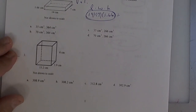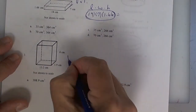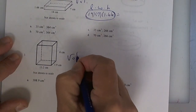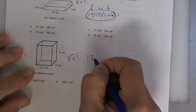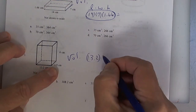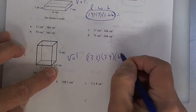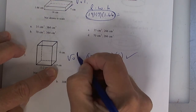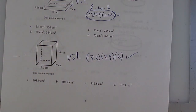Number three says volume again is what we're going to do. It works the same way. So 13.2 times 3.9 times 6. Real easy. When we get the surface area, it's a little harder. But for right now, we'll leave it as volume.